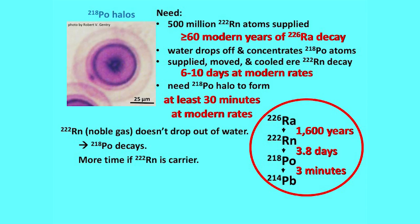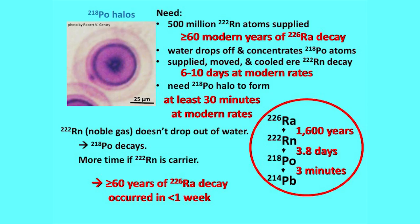We need 60 years of radium decay to produce our atoms, and then we've got to do all of this — supply atoms, move them, and cool the rock — in 6 to 10 days, assuming radon is the carrier. If polonium were the carrier, we'd have to do this in 30 minutes. So assuming the slower radon carrier, we've got to supply all our atoms, move them, and cool the rock in a week.